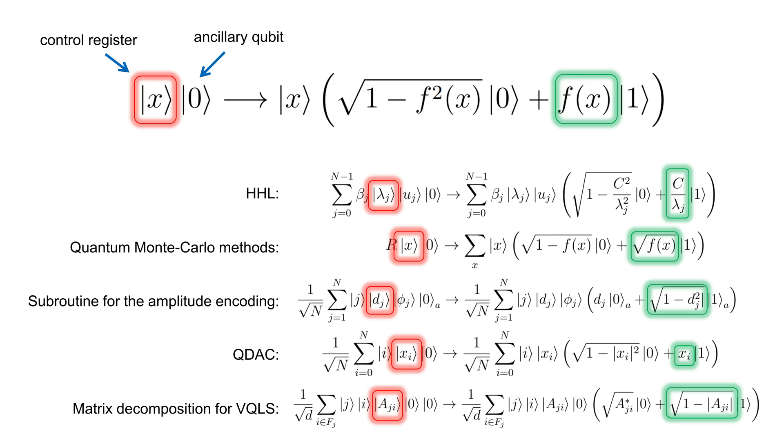In these examples, encoding into ancillary qubit can be used for the eigenvalue inversion as in HHL or to encode some other desired function.